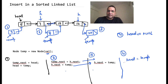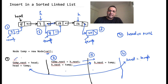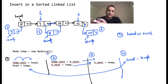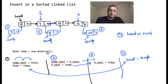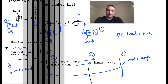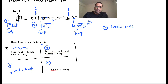If you observe, the fourth scenario and the first scenario can be the same. Because if head is null, setting temp.next to head will not make much of a difference. So we will club one and four together, and we will club two and three together. In both two and three we need to move a pointer to the node after which we are inserting the value. So one and four are the same, and two and three are the same.